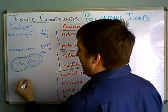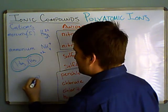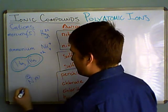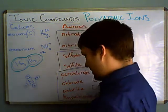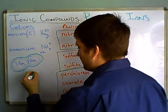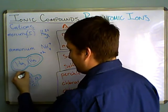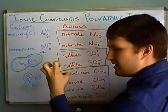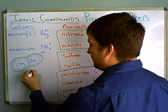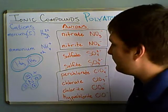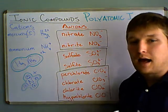With the ammonium ion, we have one atom of nitrogen and four atoms of hydrogen, all clumped together as one unit. They don't come apart, and they all behave as one ion that has a charge of plus 1. That goes for all of the polyatomic ions.